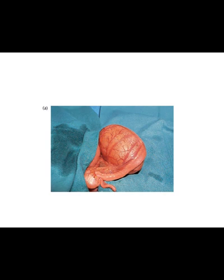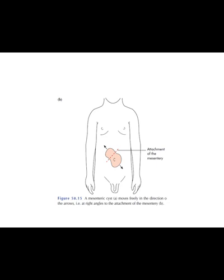This is the specimen of a chylolymphatic mesenteric cyst removed. This is the sign of mesenteric cyst as is very nicely shown. The attachment of the mesenteric root, as you know, runs from the right left subcostal to the right iliac fossa.